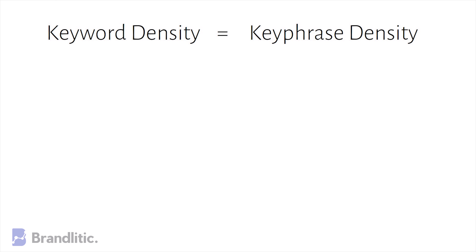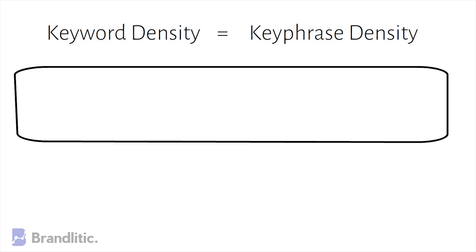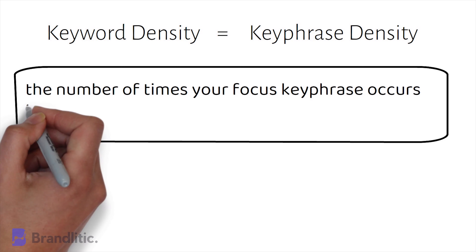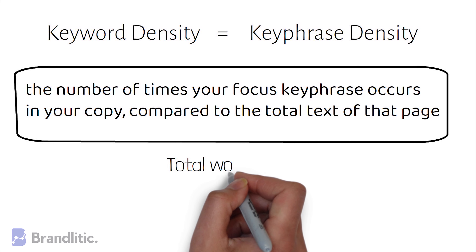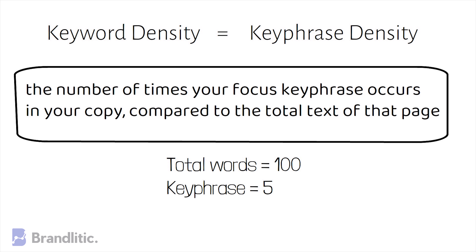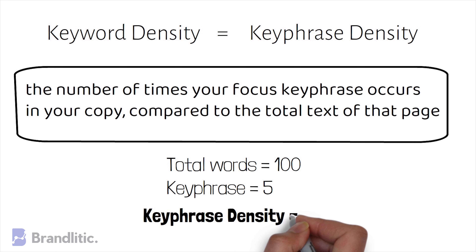Keyword density is also known as key phrase density and mostly they are the same thing. If you are someone working in the industry, both terms are used interchangeably. By definition, it means the number of times your focus key phrase or keyword occurs in your copy compared to the total text of that page. So if you have a text that is 100 words and 5 of those are your focus key phrase, then your keyword density is 5%.